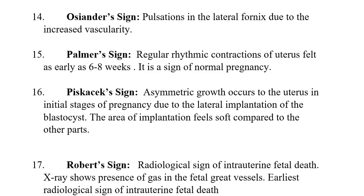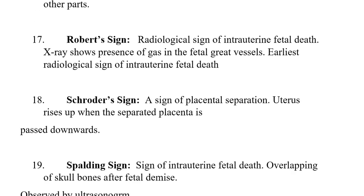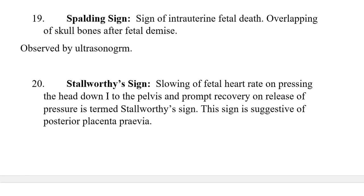Piskacek's sign is asymmetric growth of the uterus during the initial stages of pregnancy due to lateral implantation of the blastocyst; the area of implantation feels soft compared to other parts. Robert's sign is a radiological sign of intrauterine fetal death — an X-ray sign showing presence of gas in the fetal great vessels; this is the earliest sign of intrauterine fetal death. Schroder's sign is a sign of placental separation: the uterus rises up when the separated placenta passes downwards.